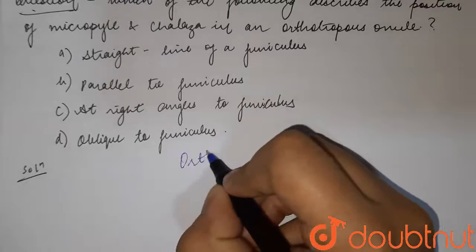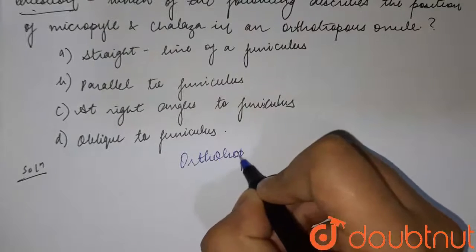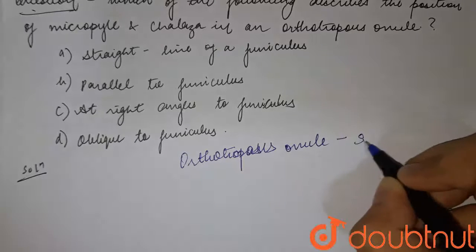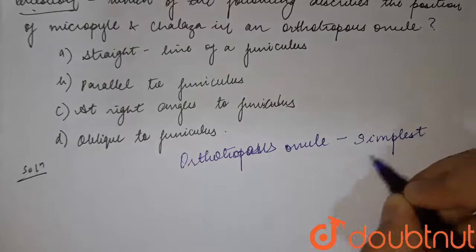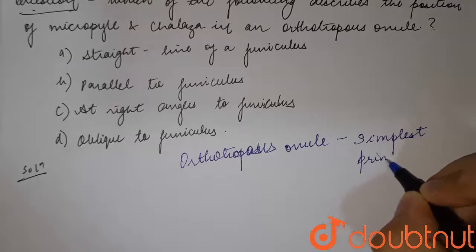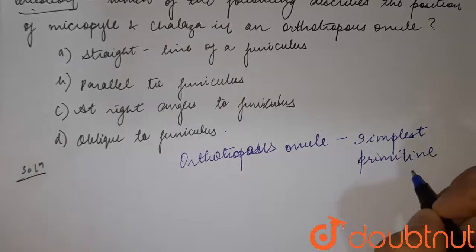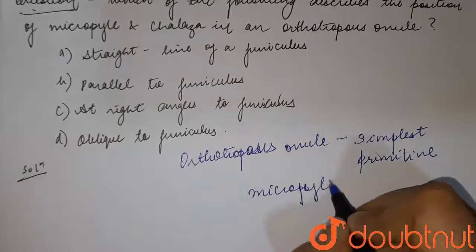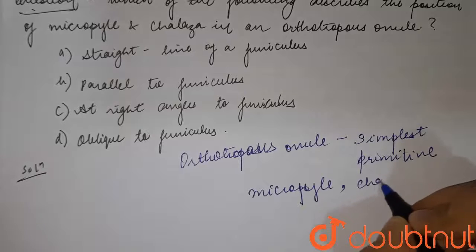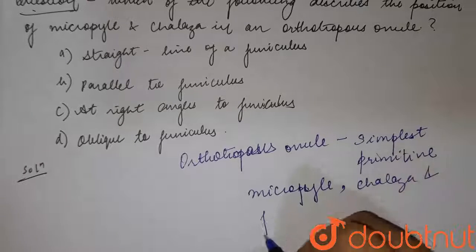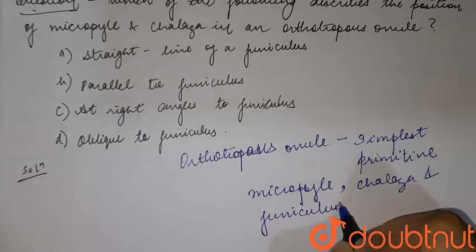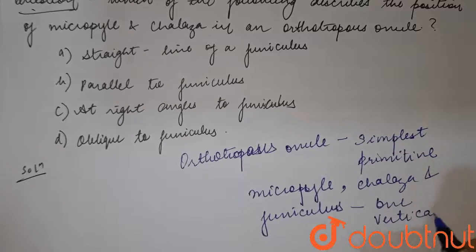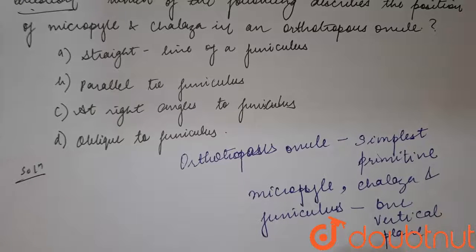If we talk about the orthotropous ovule — these are the simplest, primitive type of ovule. In this type of ovule, the micropyle, chalaza, and funiculus all lie in one vertical plane.